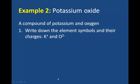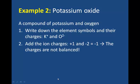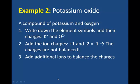Let's look at potassium oxide. Potassium oxide is a compound of potassium and oxygen. We'll follow the same steps for the first example. We'll write down the element symbols and their charges, so K+ and O2-. We'll add the ion charges, which are positive 1 and negative 2, which equals negative 1, so the charges aren't balanced.